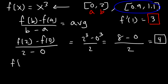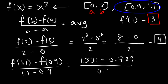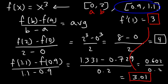So let's calculate the average rate of change using these values. It's f of 1.1 minus f of 0.9, divided by 1.1 minus 0.9. We'll need a calculator for this. 1.1 raised to the 3rd power is about 1.331, and 0.9 raised to the 3rd power is 0.729. 1.1 minus 0.9 is 0.2. 1.331 minus 0.729 is 0.602, and dividing that by 0.2 gives 3.01. So as you can see, the average rate of change is very close to the instantaneous rate of change.